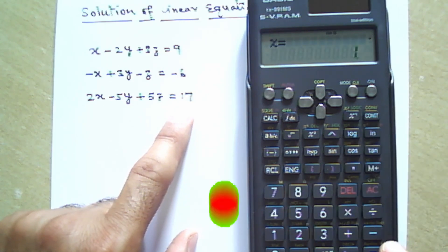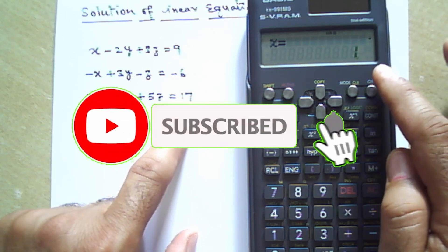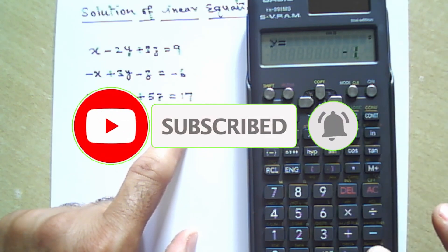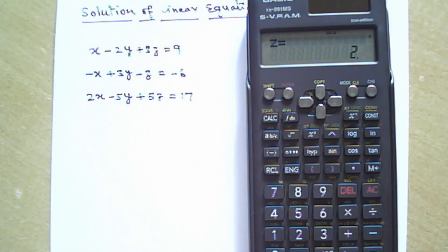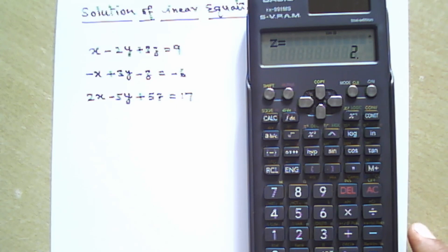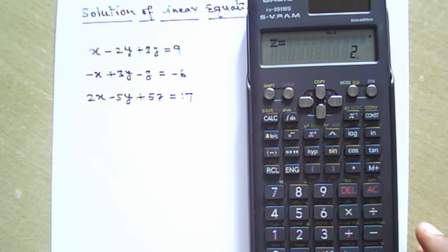The first variable x equals 1. The second variable y equals minus 1, and the third variable z equals 2. These are the three values of the variables x, y, and z. In this way you can calculate any number of linear equations using this calculator. Hope you like this video. Please like and subscribe this channel for regular updates regarding technical tools for academic purposes. Thank you.